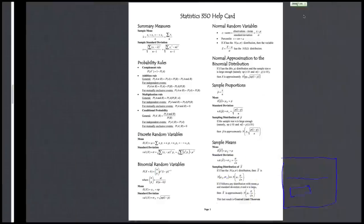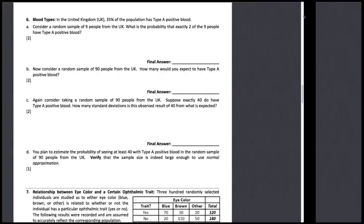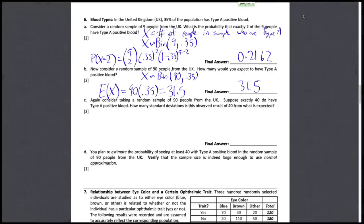And this is also found in the same part of the formula card, just right underneath it, as the square root of N times P times 1 minus P. Alright. So N here is 90, P is 0.35 and then 1 minus 0.35.